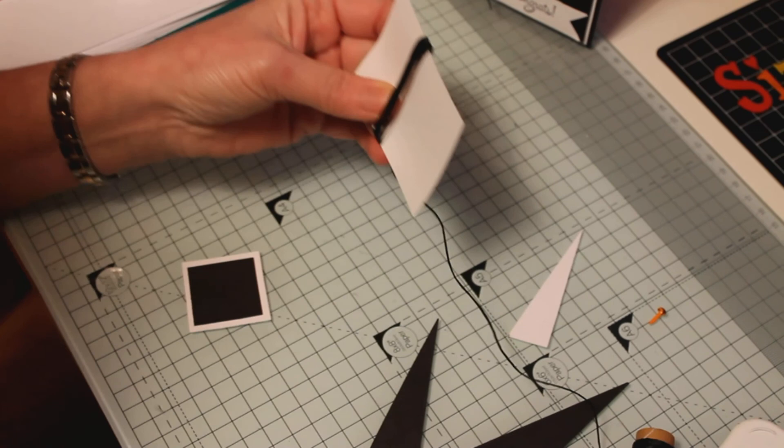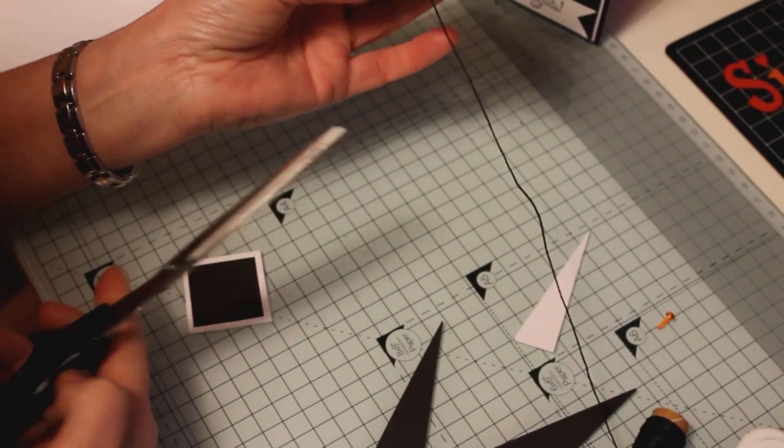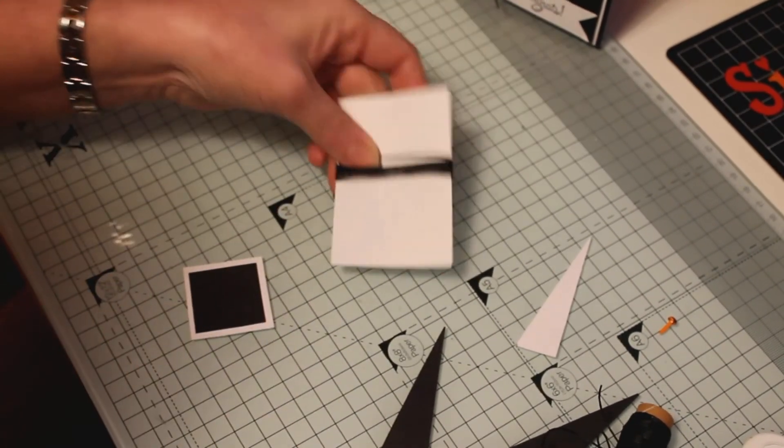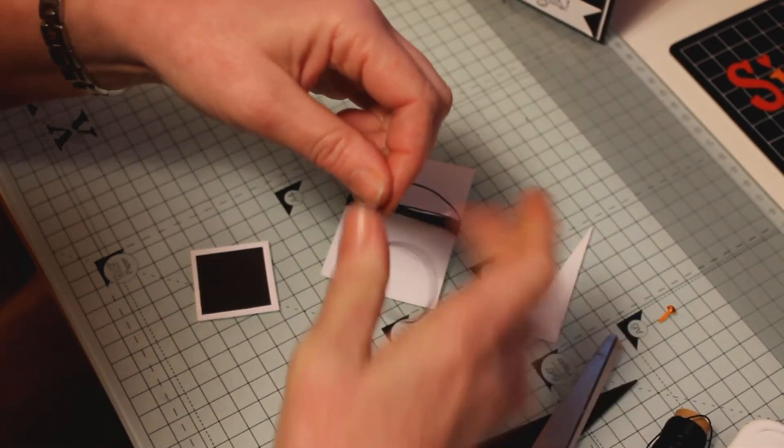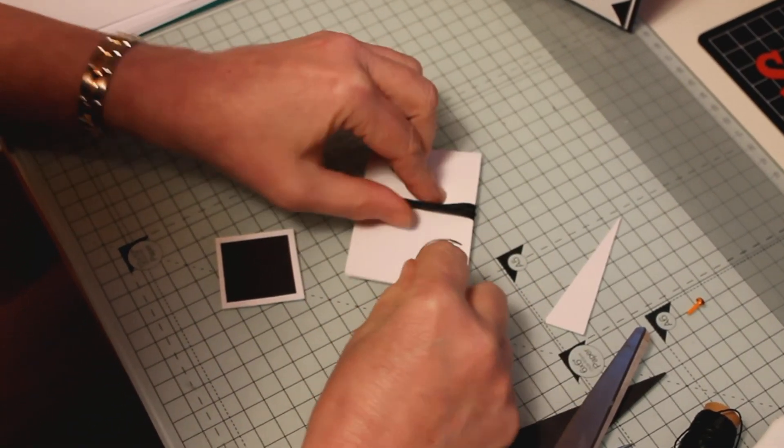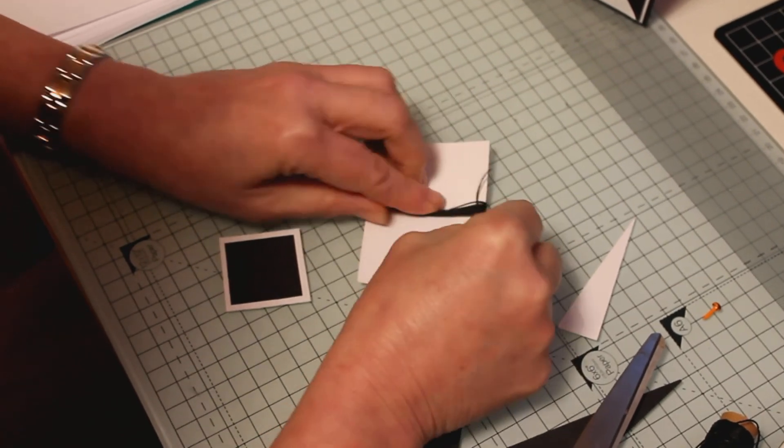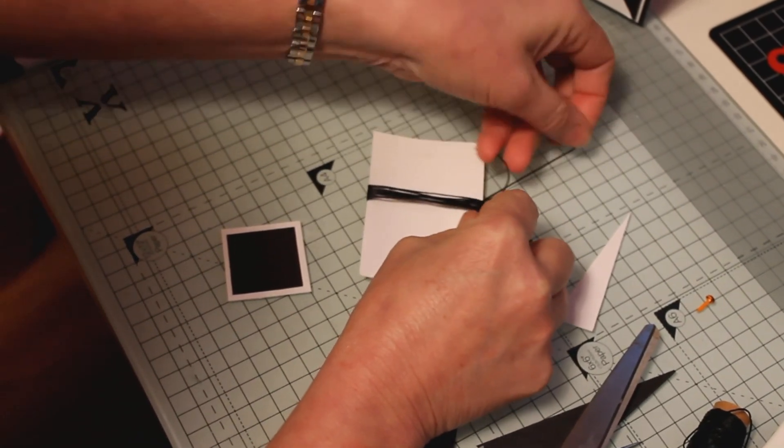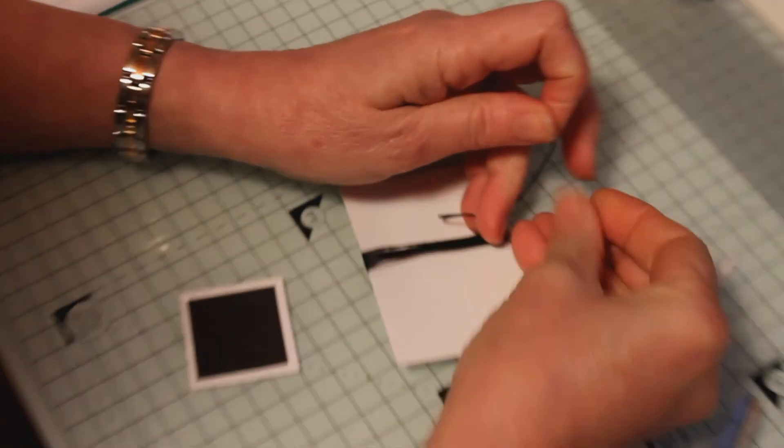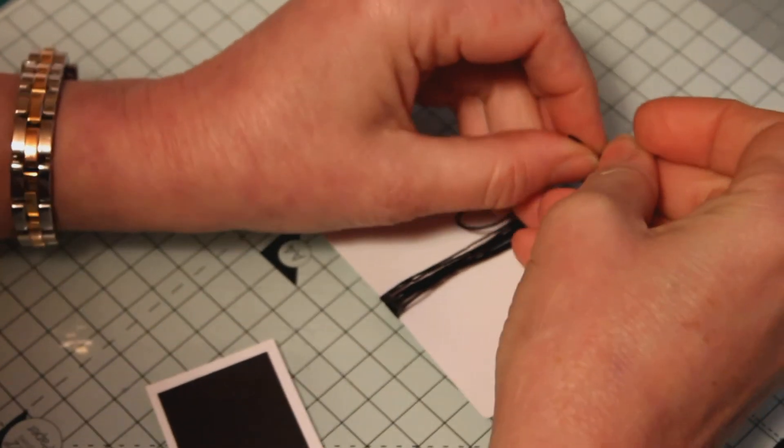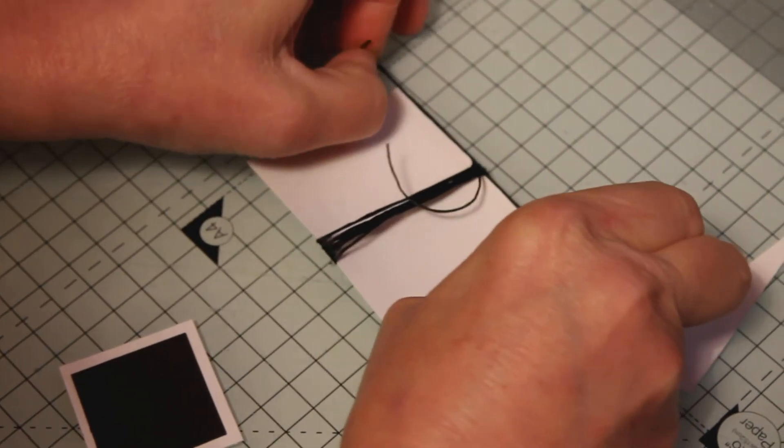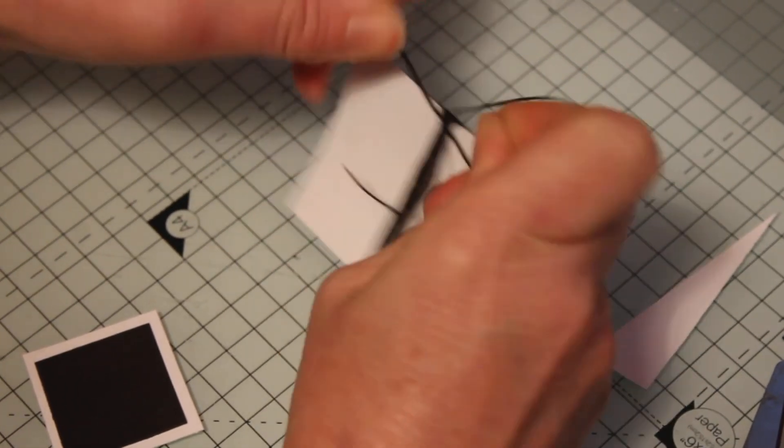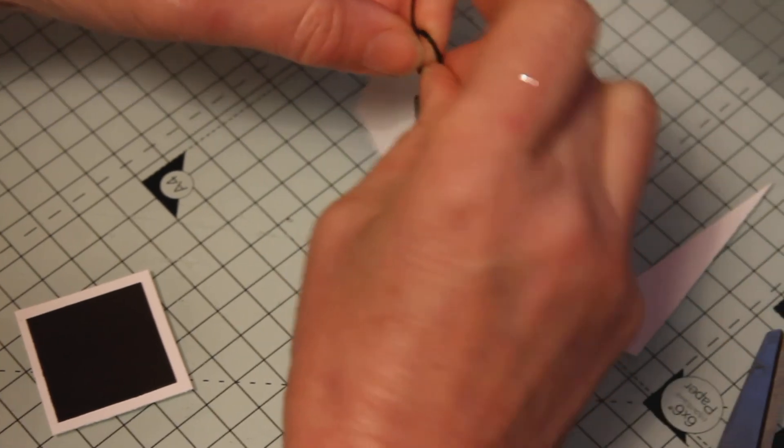Just get my scissors, snip that off there and then I need a piece for tying it off. It's a six inch piece. You simply slip your piece underneath, bring it up to the top and tie a knot.